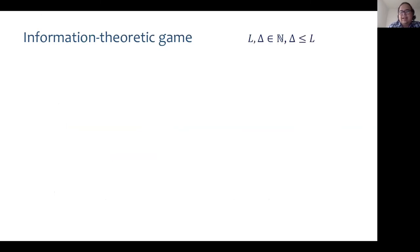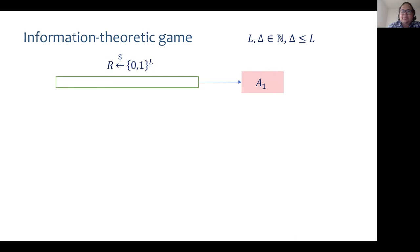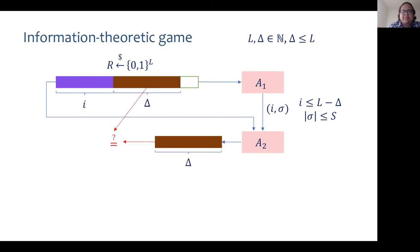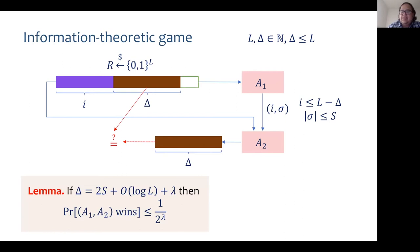In this information-theoretic game, L and delta are parameters, and it is played by a two-stage adversary. The first stage is given an L-bit string r and outputs a state sigma of size at most s and an index i. The first i bits of r and the outputs of the first stage are given to the second stage, which must guess the next delta bits of r correctly to win. Setting delta to depend linearly on s, with a straightforward compression argument, we can show that the probability of winning this game is small. I refer you to our paper for more details.